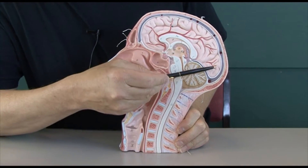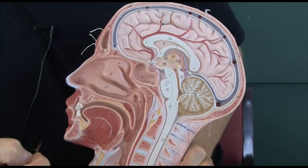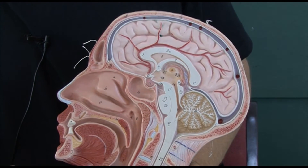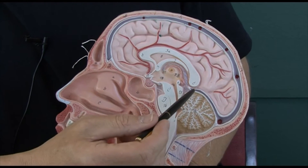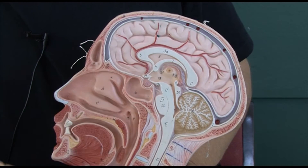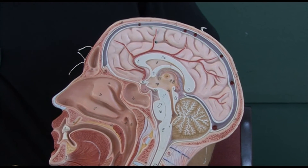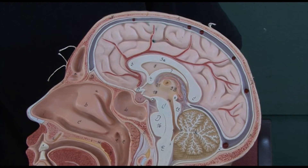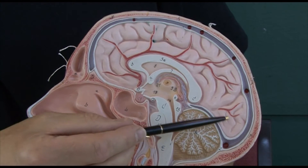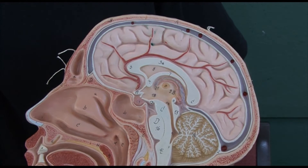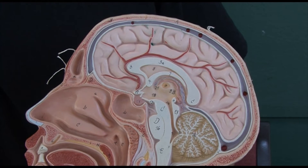Here we see the cerebrum underneath the bone of the skull. On this model, this purple area is the cerebrospinal fluid, protecting the brain to act as a shock absorber. There are two cerebral hemispheres, one on the right and one on the left, but it's very important that the two halves of the brain can communicate with each other.